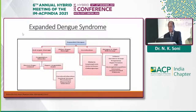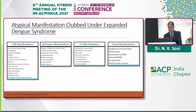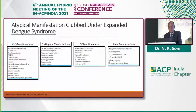Expanded dengue syndrome can cause other organ damage. Co-infection makes it more dangerous, especially when associated with malaria, leptospirosis, enteric fever, or rickettsial disease. Dengue in high-risk cases — infants, geriatric patients, and pregnant women — causes more morbidity. Atypical manifestations clubbed under expanded dengue syndrome include CNS manifestations in the form of intracerebral hemorrhage, encephalitis, cerebral infarction, myelitis, even ADEM syndrome, myalgia, and more. There is a long list of CNS manifestations that can occur.